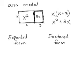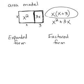Factors involve multiplication. So this is two factors being multiplied together. An x is a factor and x plus three is a factor and they're being multiplied together. So that's my factored form.